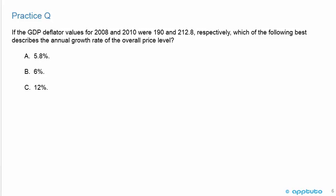We'll do another quick practice question. If the GDP deflator values for 2008 and 2010 were 190 and 212.8 respectively, which of the following best describes the annual growth rate of the overall price level? A, 5.8%; B, 6%; or C, 12%?